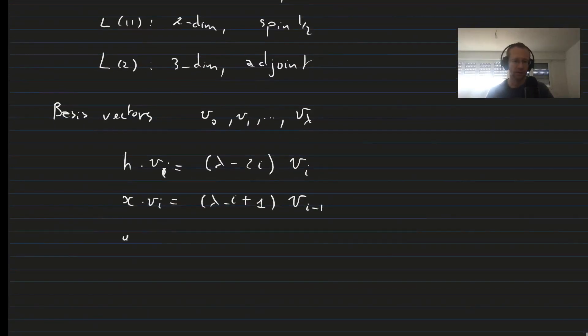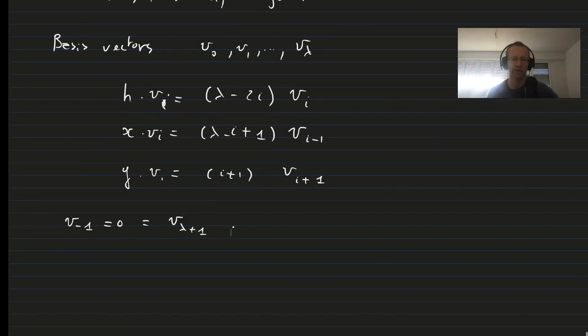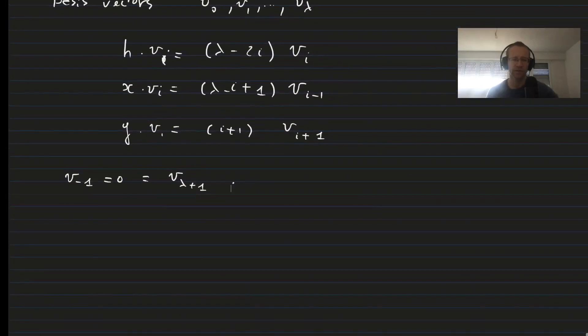And then Y acting on VI is equal to I plus 1 times VI plus 1. Moreover, we have the convention that V minus 1 is 0 as is V lambda plus 1. Then one can check that this representation is indeed a representation of the complex Lie algebra with the commutation relations given before.